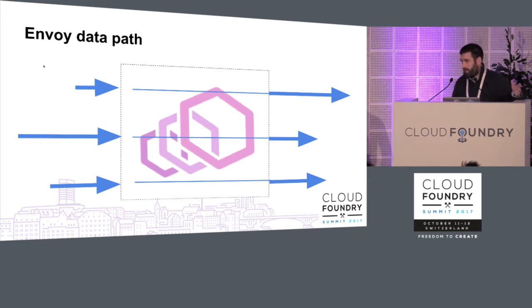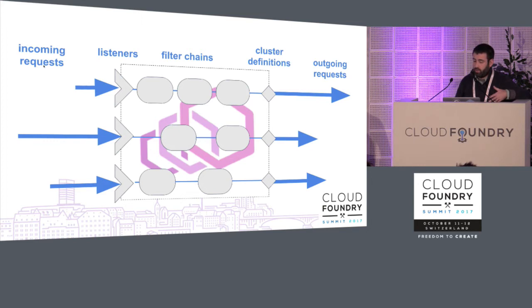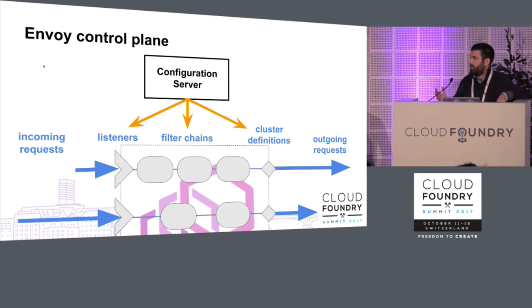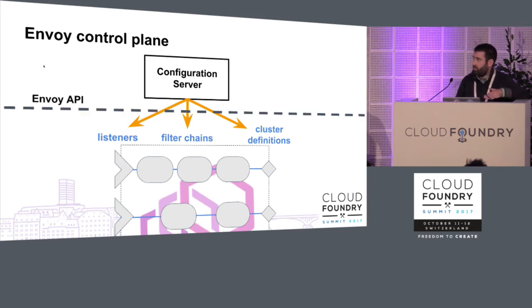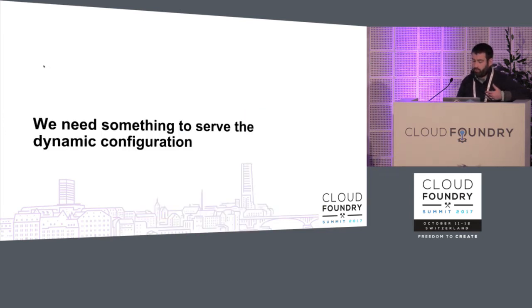How does Envoy work? Requests come in, get transformed, and go out. Internally it has listeners (things that receive TCP connections), filter chains (which can transform connections), and cluster definitions (where connections get routed to on the way out). To configure all this, Envoy expects a configuration server to push or pull updates from — using gRPC in the latest version — to pull down definitions of listeners, filter chains, and clusters. Envoy is agnostic about who provides that API, but using it in the fanciest way requires a sophisticated server behind the scenes. That's the motivation for Istio.